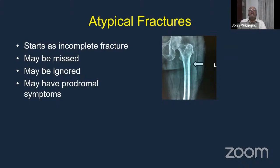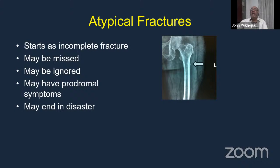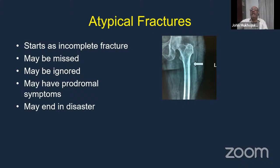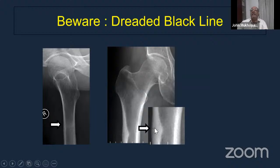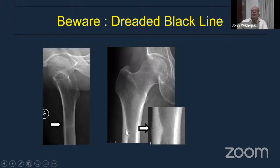This starts as an incomplete fracture and may be missed. The patient will complain of pain in the hip region, and on X-ray you may see nothing, or just a mild crack which you're unsure about and might ignore or miss altogether. These may be prodromal symptoms of something that is going to happen. This is what is talked about as the 'dreaded black line' — the earliest sign. As you magnify the X-ray, you can see this dreaded black line, and you can also see the cortex hypertrophying on that side.